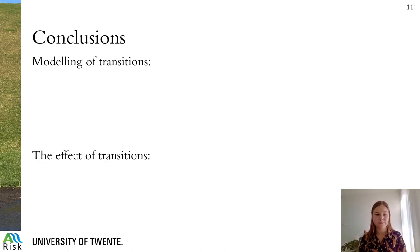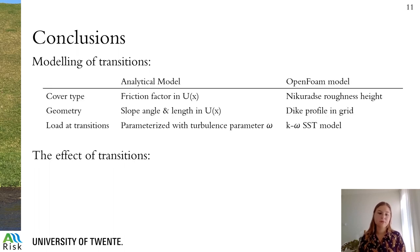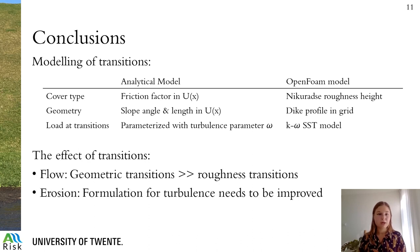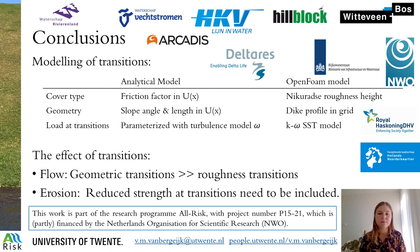Finally, the conclusions from our study. Regarding modeling of transitions: the effect of cover type can be taken into account by a friction factor in our analytical model and a Nikuradse roughness height in our OpenFOAM model. The geometry is included in the analytical model by adapting the slope angle and length of elements, and in OpenFOAM by generating the grid from the dike profile. The additional load at transitions is parameterized with turbulence parameter omega in our analytical model, and in OpenFOAM we solve the turbulence using the K-Omega SST model. Regarding the effects of transitions: geometric transitions have much more influence on the flow than roughness transitions, but to draw firm conclusions on erosion we need to improve the formulation for the turbulence parameter omega. I want to thank all our funders for this research, and if you want to contact me, you can find my contact details below.